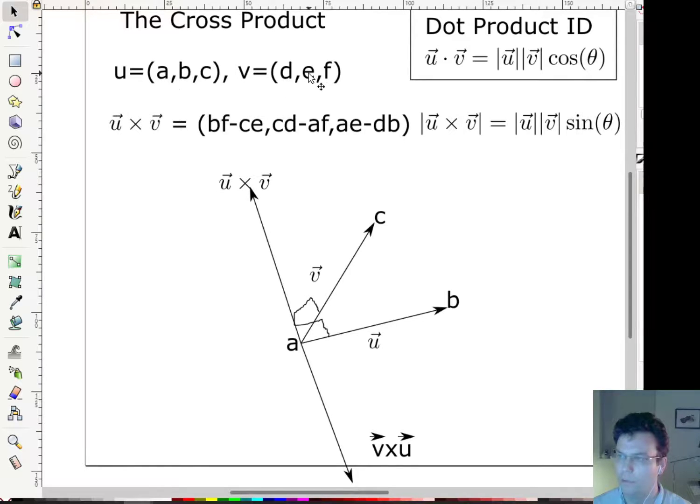The magnitude will be the same of u cross v and v cross u, but the direction will be exactly the opposite. And you can see that if I, you should verify this yourself, but if I swap the coordinates of u and v, so I make u (d,e,f) and v (a,b,c), you'll see that you get the same thing up to a sign. And the way that we figure out which one we're going to get visually without looking at coordinates, but we just want to be able to draw a picture like this, we use something called the right-hand rule.